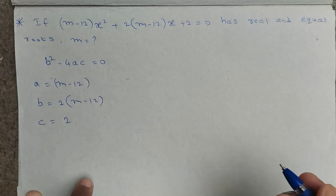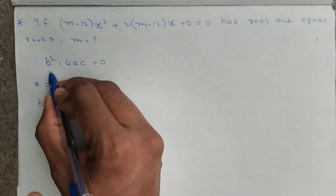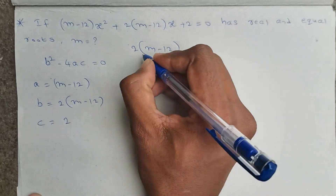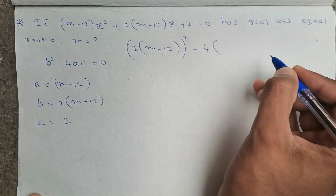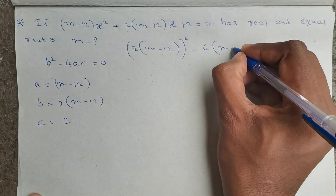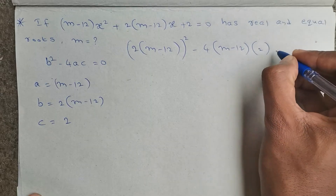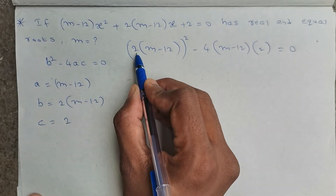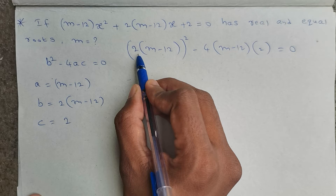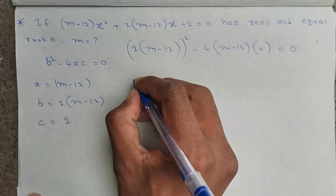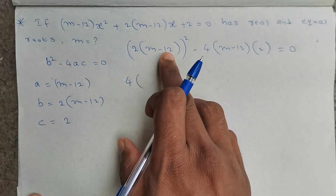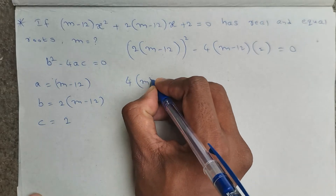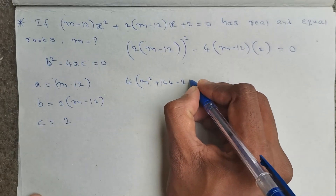Now let us substitute into b² minus 4ac. In place of b we have 2(m minus 12), so we get 2(m minus 12) whole square minus 4 times (m minus 12) times 2, equals 0. Expanding 2(m minus 12) whole square: 2² is 4, and (m minus 12)² expands as m² plus 144 minus 24m.